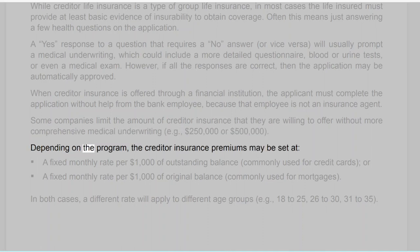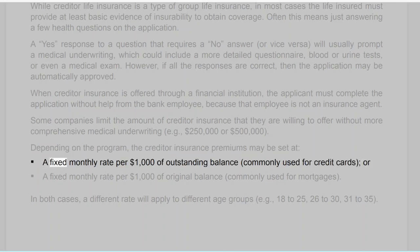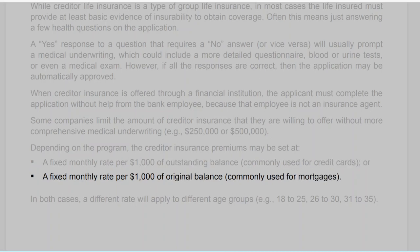Depending on the program, the creditor insurance premiums may be set at a fixed monthly rate per $1,000 of outstanding balance, commonly used for credit cards, or a fixed monthly rate per $1,000 of original balance, commonly used for mortgages.